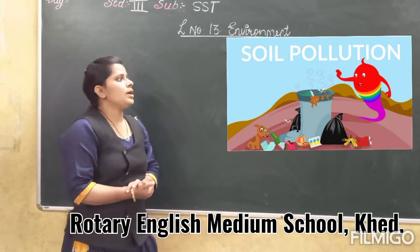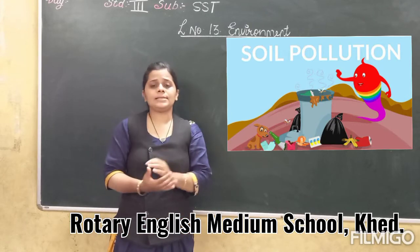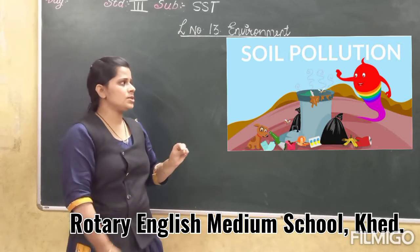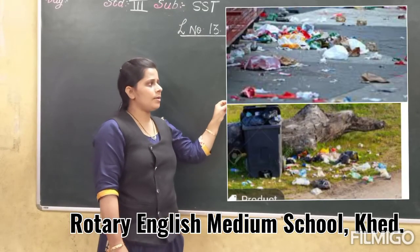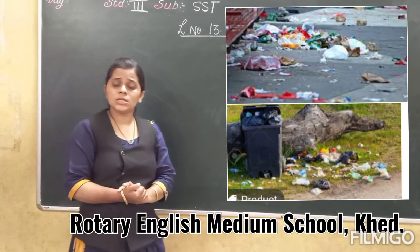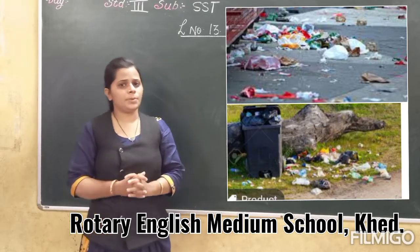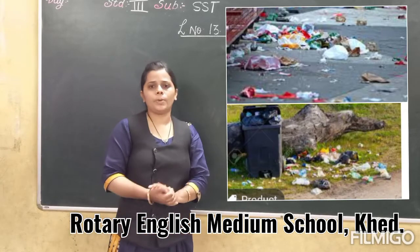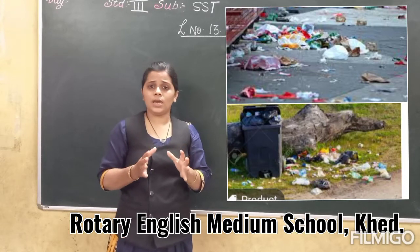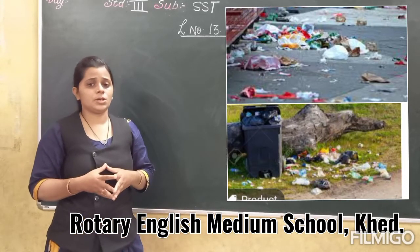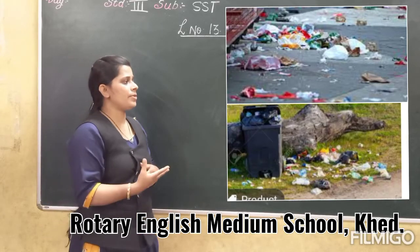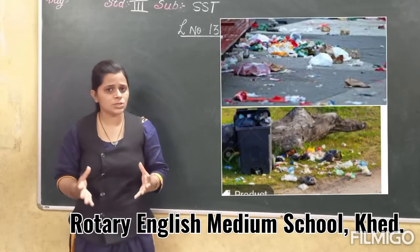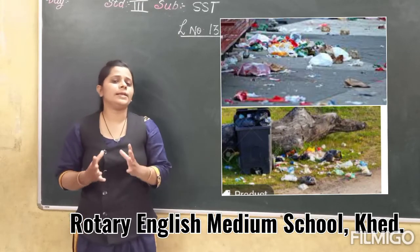The soil gets polluted by our careless actions. What are our careless actions? We throw waste on the road, in parks, and in other public places, which causes soil pollution. We also throw polythene bags and plastic in the soil. And waste from factories also gets the soil polluted. These are the careless actions by which the soil gets polluted.